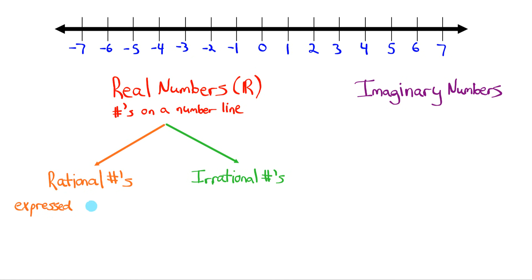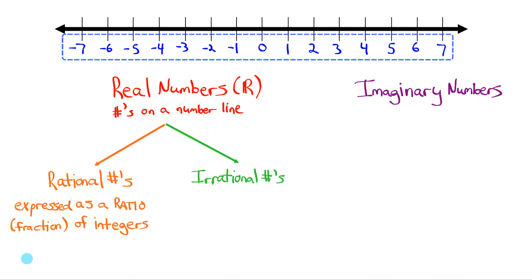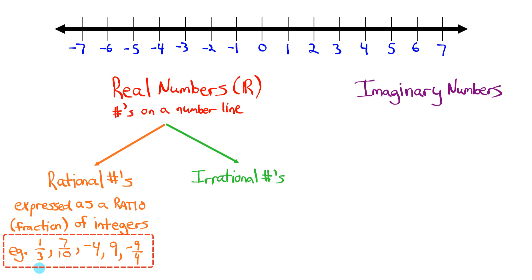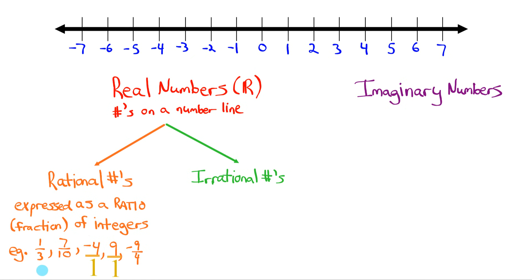Rational numbers are numbers that can be expressed as a ratio — another word for ratio is fraction — of integers. Remember, integers are all the numbers you see labeled on that number line. Examples of rational numbers could be 1 over 3, 7 over 10, negative 4, 9, negative 9 over 4, and so on. All of those numbers are expressed as a ratio of integers. Integers like negative 4 and 9 can be expressed as being over 1 if you want to think of them as fractions, so those count as rational numbers as well.